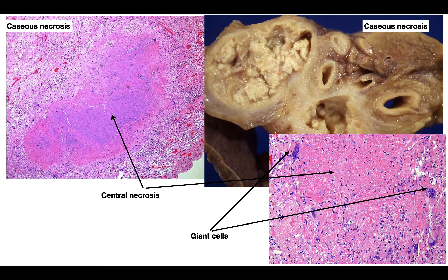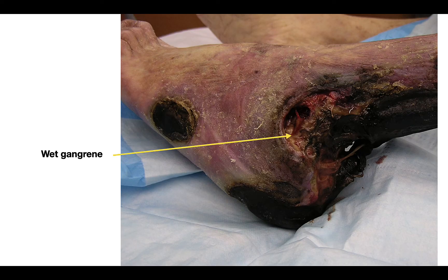Caseous necrosis: the top right shows peripancreatic caseous necrosis — that's the pancreas, and to the left that cheesy material is the caseous necrosis. The low-power micro shows the central area is necrotic and breaking down, like liquefactive-type necrosis, rimmed by giant cells. When you have granulomas with central necrosis that'd be caseous necrosis, most commonly associated with TB. For wet gangrene — seen commonly in diabetic patients because of nerve and vascular damage leading to non-healing ulcers — if those ulcers get secondarily infected you can see pus-type material, which is wet gangrene.